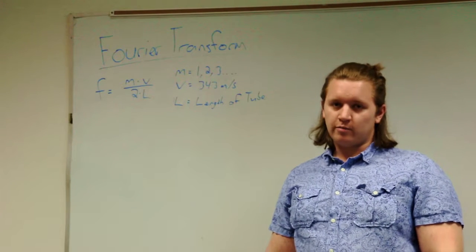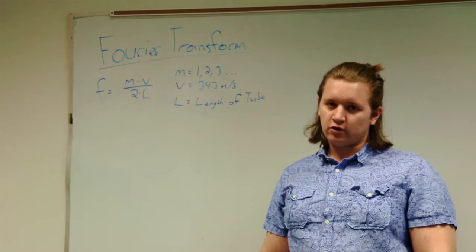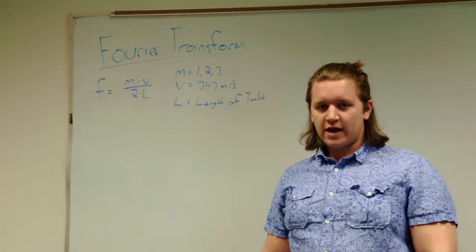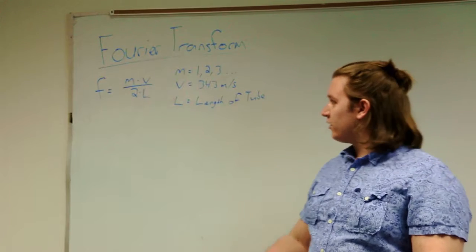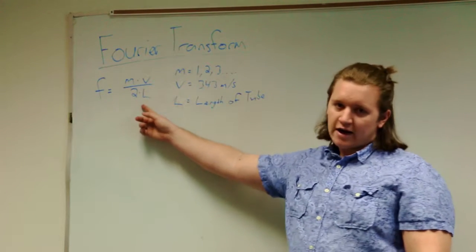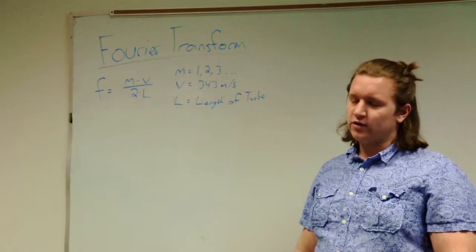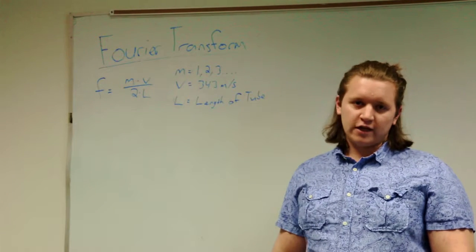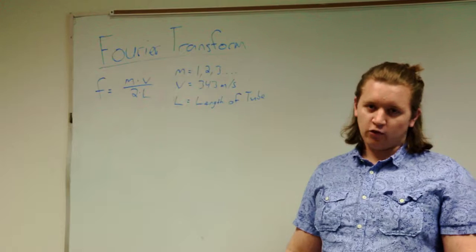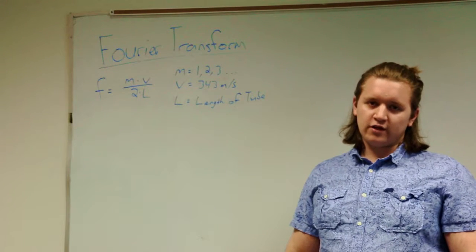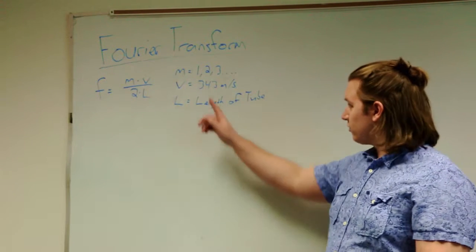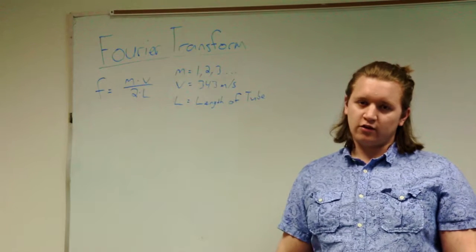We used principles and theories we learned in class this past quarter. One of them being this equation for frequency: F equals M times V over 2L. This is for open-open tubes. M is any integer 1, 2, 3, 4. V is the velocity of air, which is 343 meters per second, and L is the length of the tube.